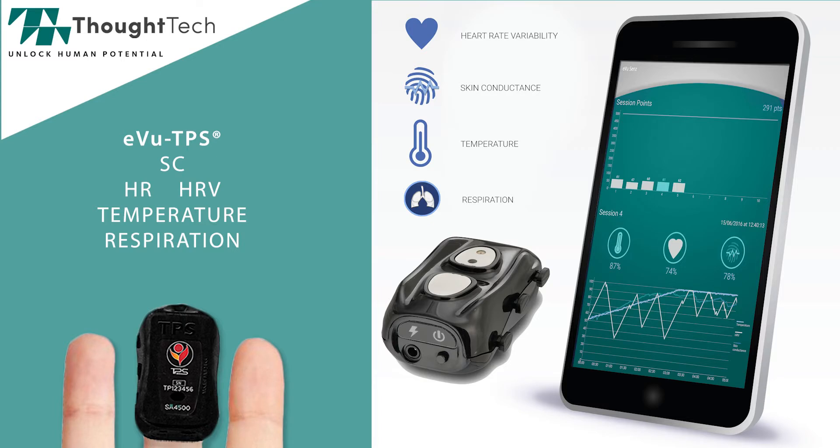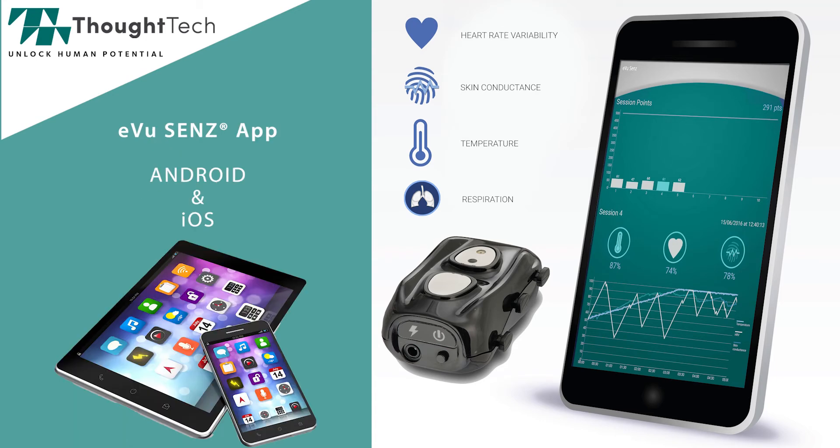The eView TPS monitors skin conductance, heart rate, heart rate variability, temperature and respiration, all from a fingertip. The eView Sense app monitors these signals on both Android and Apple tablets and phones.